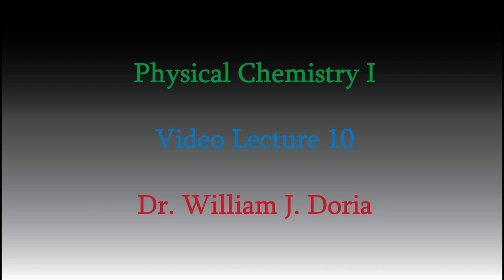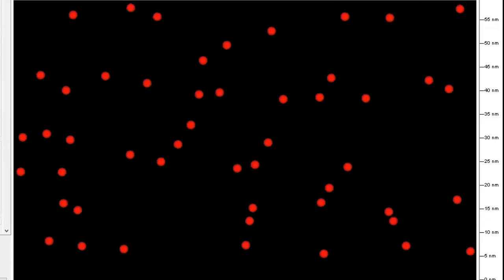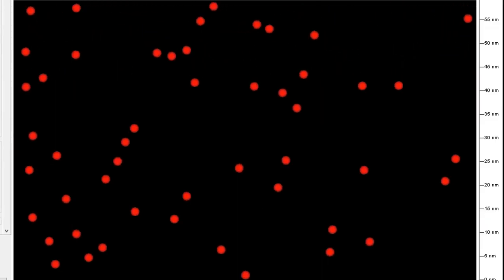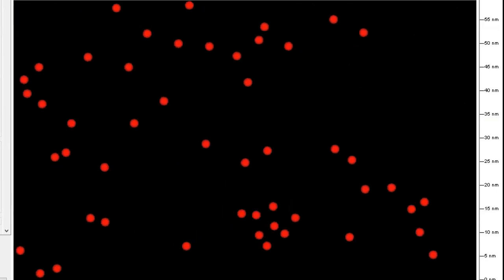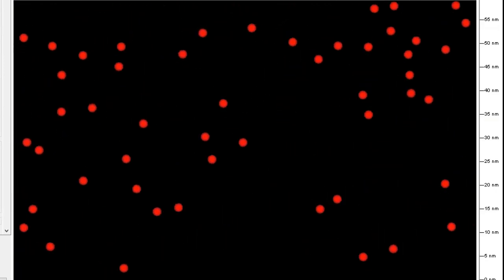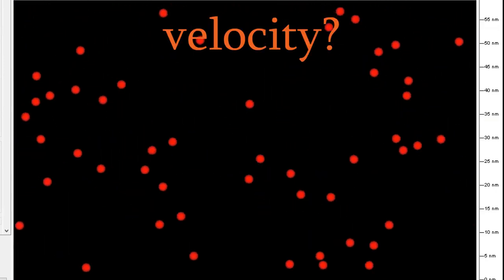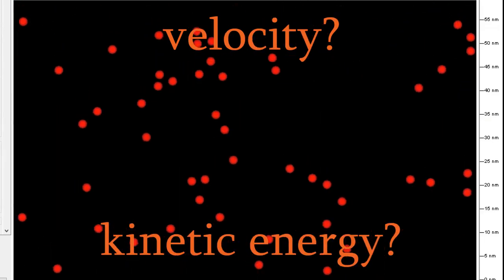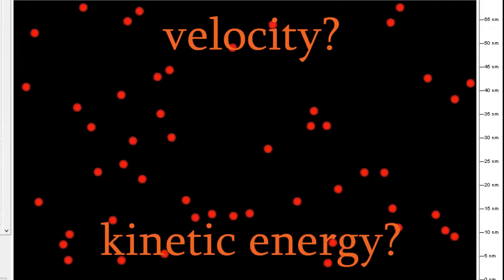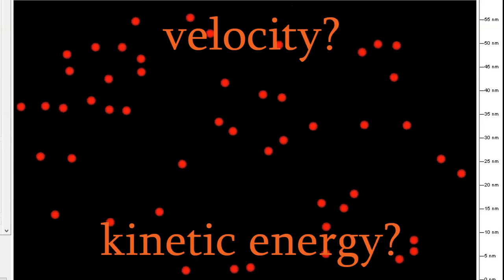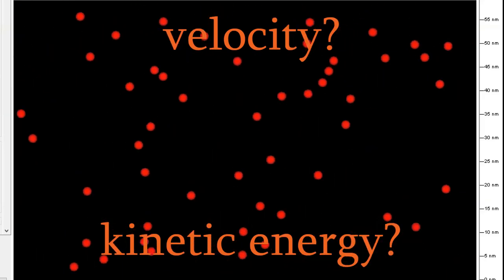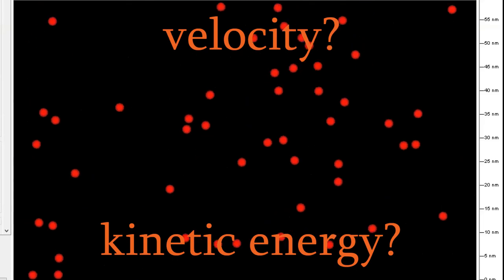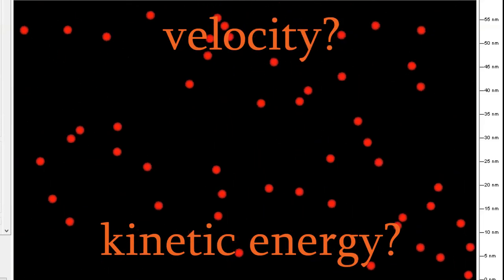Hi, and welcome back to my series of videos for Physical Chemistry 1. Today, I want to start taking a closer look at what happens in gases at the molecular level. There are two related things we might like to know about the molecules in a sample of gas: how quickly they're moving, and what's their kinetic energy? Those two properties will help us understand how gases behave, and today we'll come up with useful and simple equations for both the velocity and the kinetic energy. But we'll have to do a little work to get there.